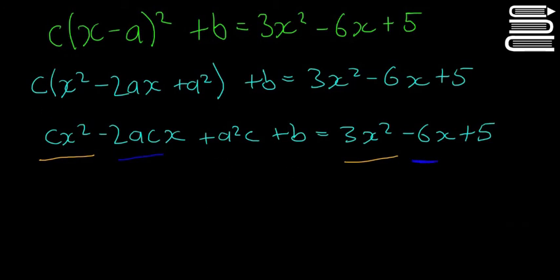Again, that's called an identity and the last one we use pink for that a squared c plus b has to be equal to plus 5. So make sure it's the whole thing here, not just a squared c here, not just b, it's the whole thing is equal to the whole thing. So I'm going to write those out.